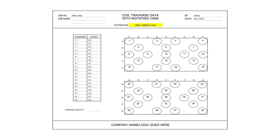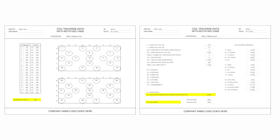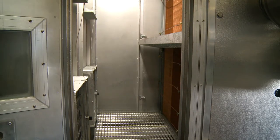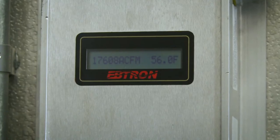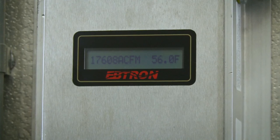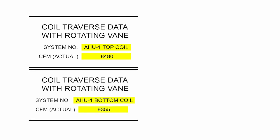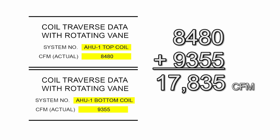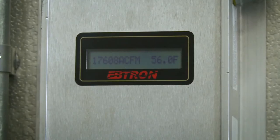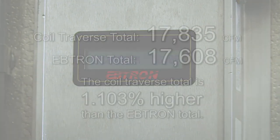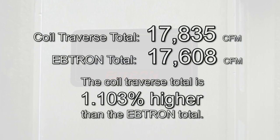On page 2 of the coil traverse data with rotating vane form for AHU-1 Bottom Coil, record the standard velocity readings. The average velocity, K-factor, and CFM actual values are automatically calculated for AHU-1 Bottom Coil. Each of the four fan inlets has a flow station, which is totalized to give the actual airflow. The Ebtron flow station's actual airflow for both top and bottom unit totalized is 17,608 CFM. The AHU-1 Top Coil actual CFM is 8,480, and the AHU-1 Bottom Coil actual CFM is 9,355, with a total of 17,835 CFM. Therefore, the coil traverse total is 1.103% higher than the Ebtron total.